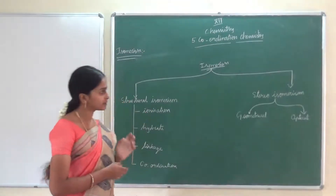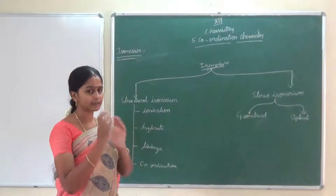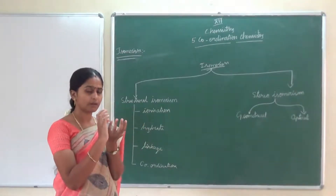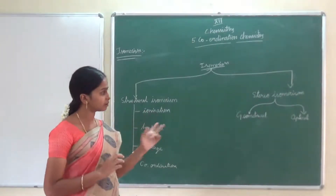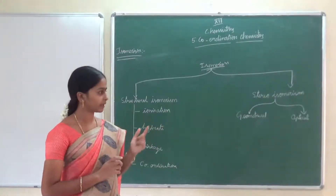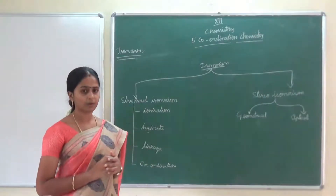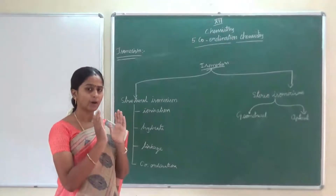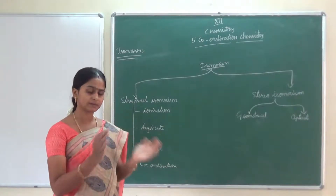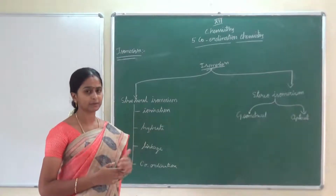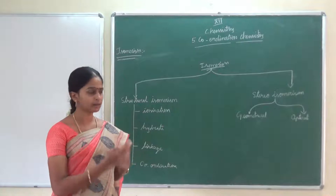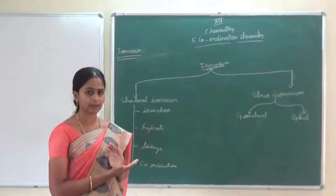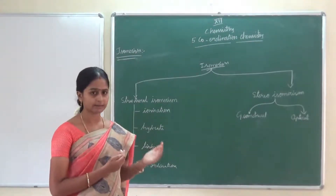The next type is stereo isomerism. Stereo means the spatial arrangement of ligands in a three-dimensional way around the central metal atom. Because of different spatial arrangements, we get two types: geometrical isomerism and optical isomerism. Geometrical means cis and trans — if similar ligands occupy the same side it is cis, if opposite side it is trans. Optical isomers involve the rotation of plane-polarized light — whether it is levorotatory or dextrorotatory.